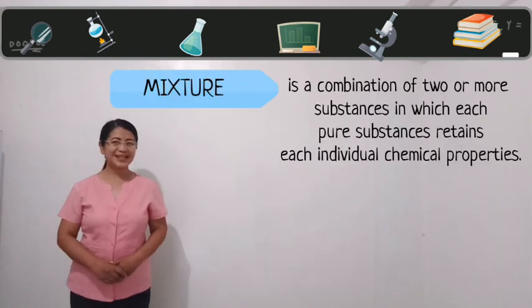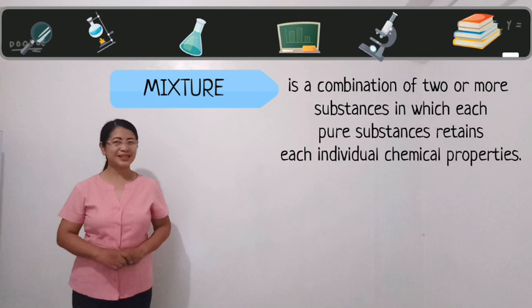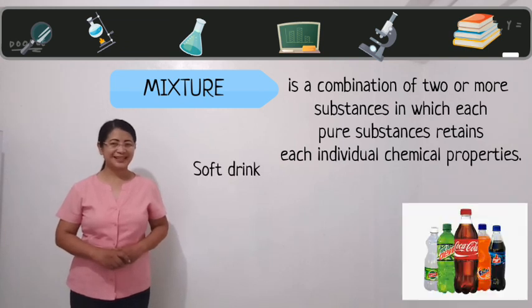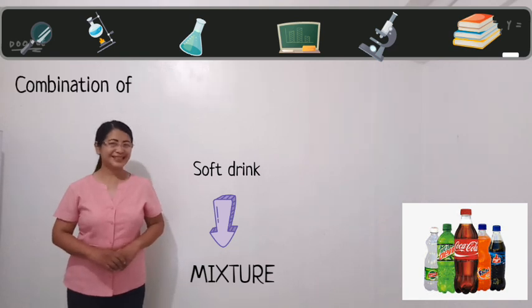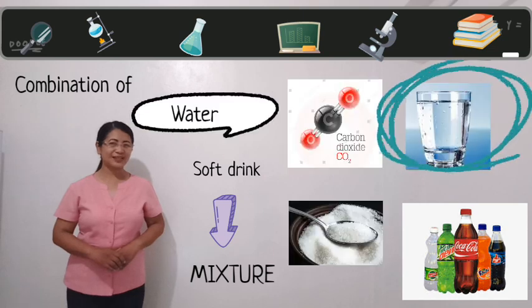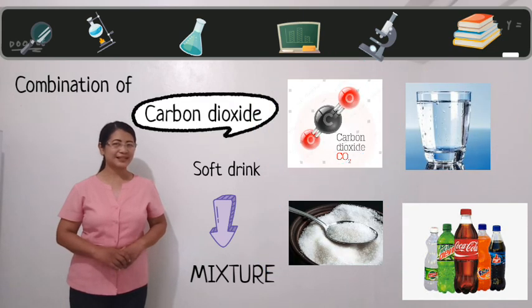Mixture is a combination of two or more substances. Each pure substance retains its individual chemical properties. Soft drink is an example of a mixture. It is a combination of water, sugar, and carbon dioxide gas.